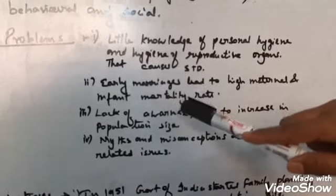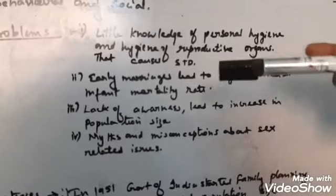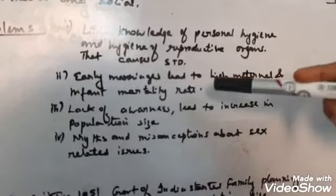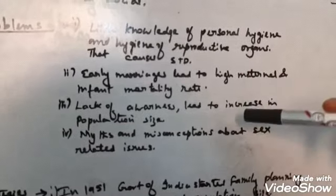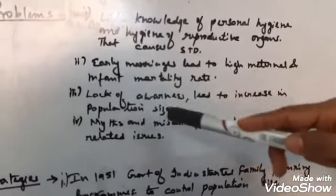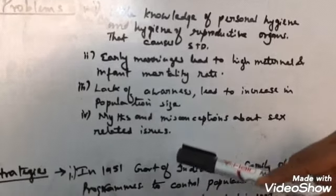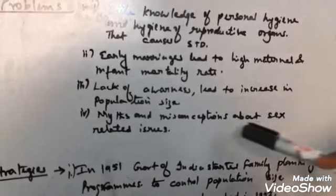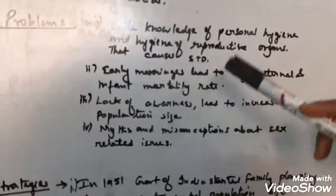Next point is early mismarriages. In India, in many states, people are illiterate or they do not know the impacts of early marriages, so early marriages are very high, that lead to maternal and infant mortality rate. Third is lack of awareness that lead to increase in the population size. And fourth is myths and taboos and misconceptions about sex-related issues. These are the problems of Reproductive Health.